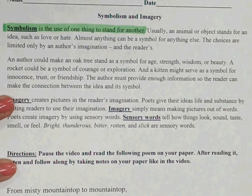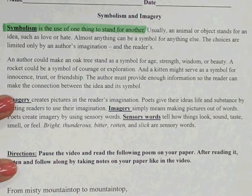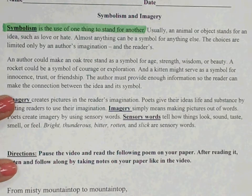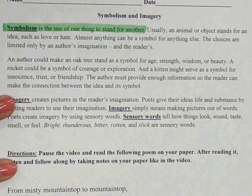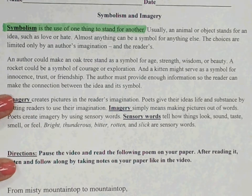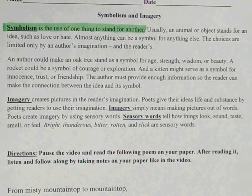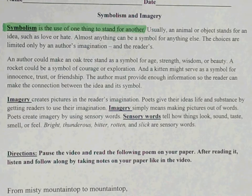Almost anything can be a symbol for anything else. The choices are limited only by an author's imagination and the reader's. An author could make an oak tree stand as a symbol for age, strength, wisdom, or beauty. A rocket could be a symbol of courage or exploration.